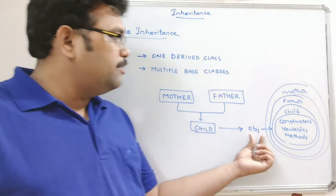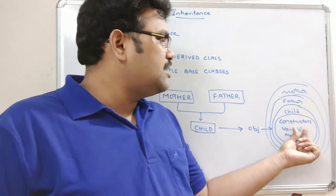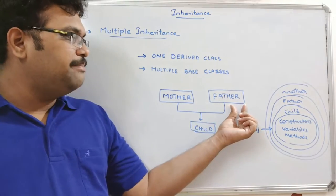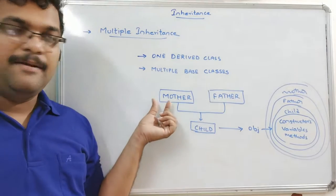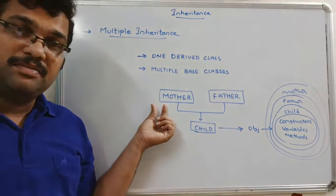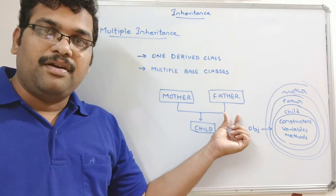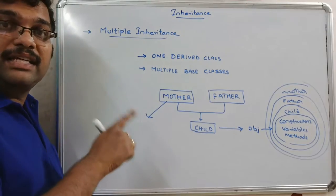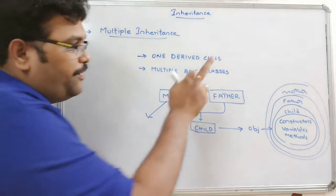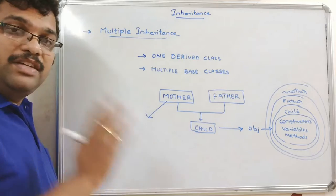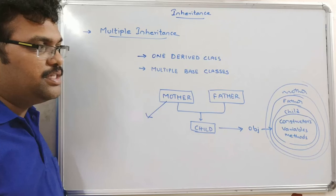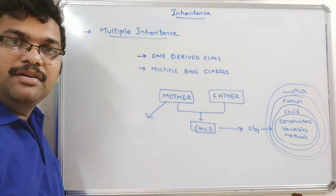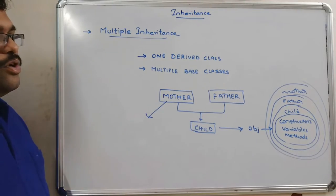The object of the derived class can acquire the properties of all base classes. So the child object can access the constructors, variables, and methods from the child class, father class, and mother class. However, a father class object cannot access methods or variables from the child class or mother class, and similarly a mother class object cannot access the variables and methods of the child class or father class.